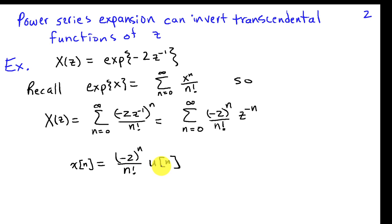And that implies then that X of N is negative 2 to the N divided by N factorial and will multiply by U of N to indicate that this holds when N is greater than 0 and it's 0 otherwise. So you can do things like logarithms or cosines and so on.